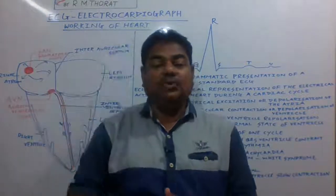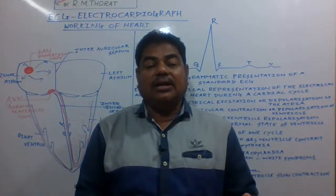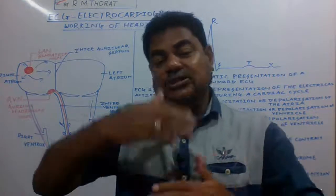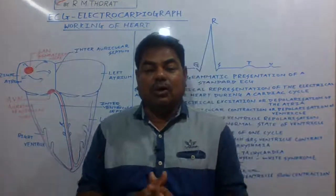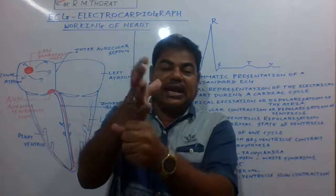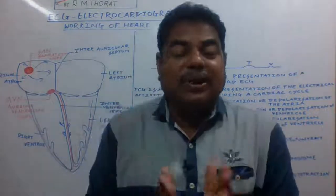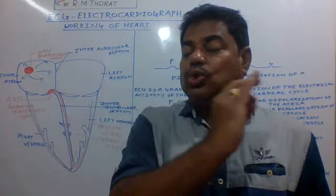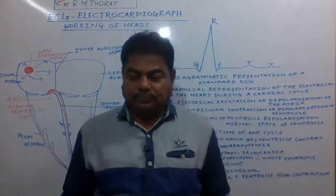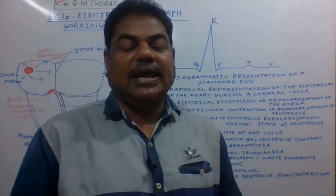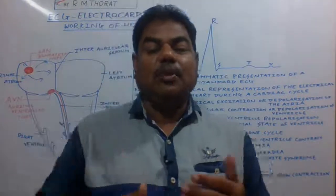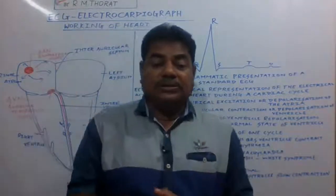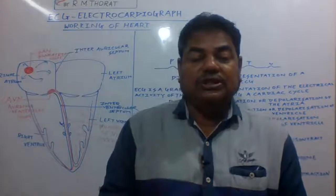Blood is pumped from the left ventricle to the aorta and from the right ventricle to the pulmonary artery. In this way blood gets circulated throughout our body. This rhythmic contraction and relaxation takes place an average of 72 times per minute, and five liters of blood get pumped by the heart through these functions.